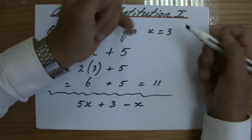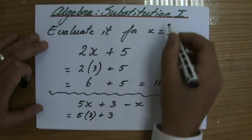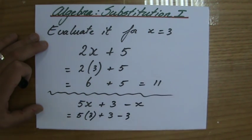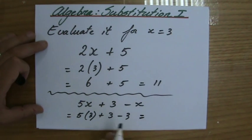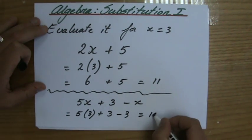We have to evaluate it for x equals 3. Then I would do 5 times 3 plus 3 minus x, so minus 3. And that, if you work it out properly, is 15. So the answer would be 15.